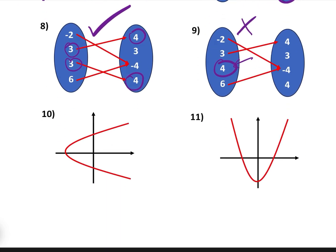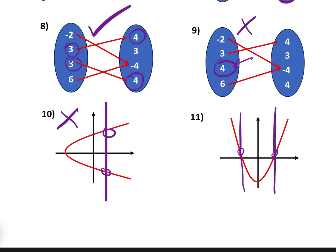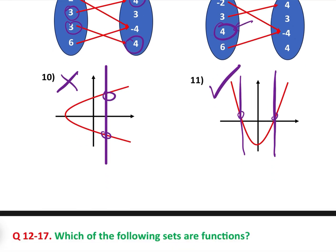Question ten: using the vertical line test, it's quite clear that the line hits the graph in two places, so that is not a function. Question eleven: no matter where we put the vertical line, it is only going to hit the graph in one place. So it passes the vertical line test and therefore that is a function.